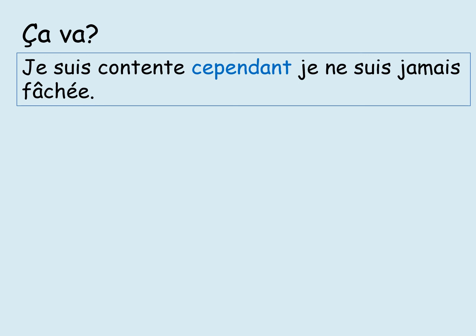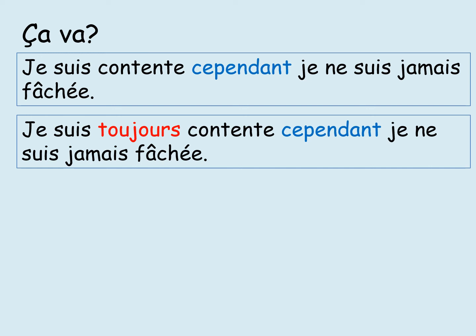That's brilliant work so far. We've extended our sentence from starting with je suis, using a negative and a connective, and now we are going to develop that sentence further like our lesson objective was. In the red, you can see we've added an adverb. Je suis toujours contente — cependant, je ne suis jamais fâché. What am I saying about myself? I am always happy. However, I am never angry.